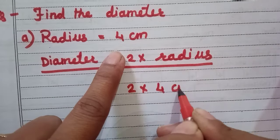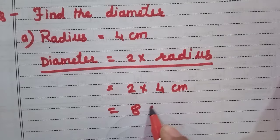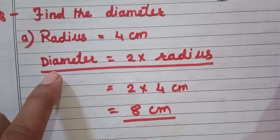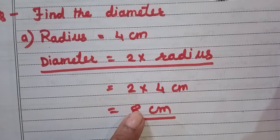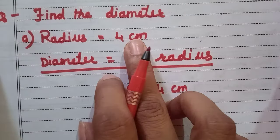Radius is 4 centimeter, and 2 times 4 is 8. So our answer is 8 centimeter. Your diameter is 8 centimeter. You have to write this method also, okay?